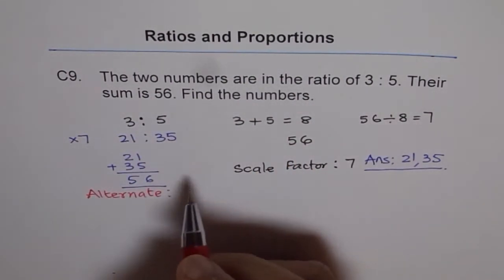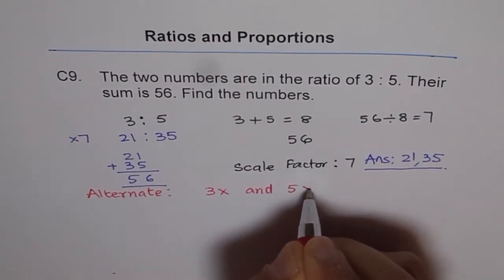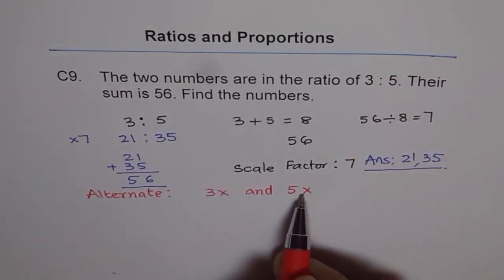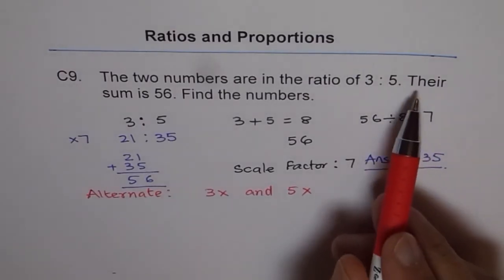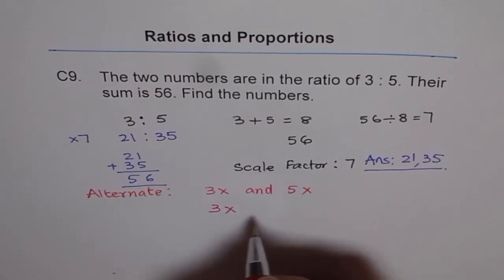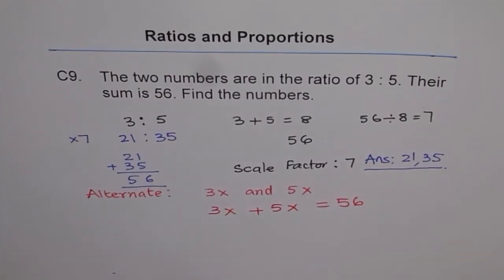Then the numbers are 3x and 5x. We don't know the scale factor, so we write x for them. That is how we write the numbers. And then say their sum is 56, that means 3x plus 5x is equals to 56.